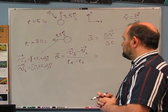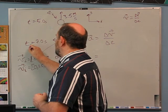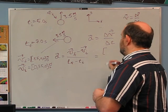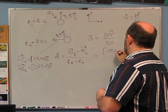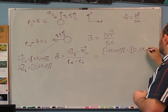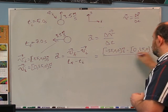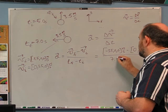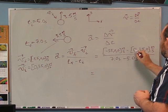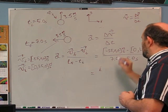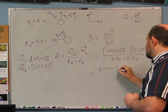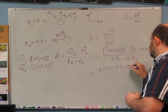Delta t is 7.0 minus 5.0 seconds = 2.0 seconds. So v_f minus v_i is (-3.5, 0, 0) minus (0, 3.5, 0) m/s, all divided by 2.0 seconds. Subtracting each component: (-3.5 - 0) = -3.5, and (0 - 3.5) = -3.5.